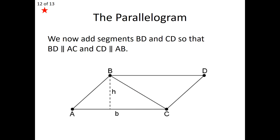Where we begin is by constructing some parallels. Off point C and off point B, we construct segment BD through point B, parallel to side AC. Then we construct segment CD from point C, parallel to side AB. Those two segments intersect at point D. So those two pairs of segments are parallel, and we conclude that shape ABDC is actually a parallelogram. We'll use that parallelogram to derive the area formula of the triangle.